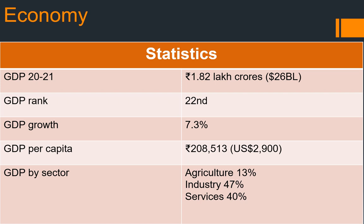Now the economy of Himachal Pradesh. GDP is 1.82 lakh crore INR, which is also 26 billion US dollars. Its rank is 22nd in India. GDP by sector: Agriculture is 13%, which is mainly from apples, and that is why Himachal Pradesh is also called the Apple Capital of India. Industry is 47%, with major industrial towns being Kala Amb, Baddi, Parwanoo, and Bilaspur. Other services are 40%.